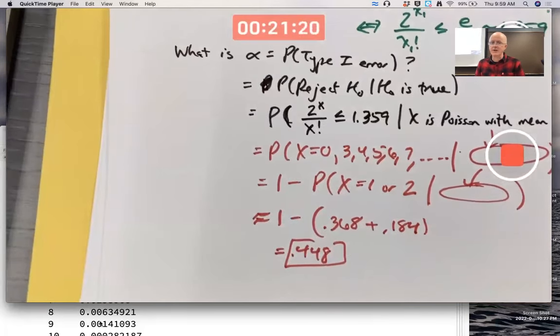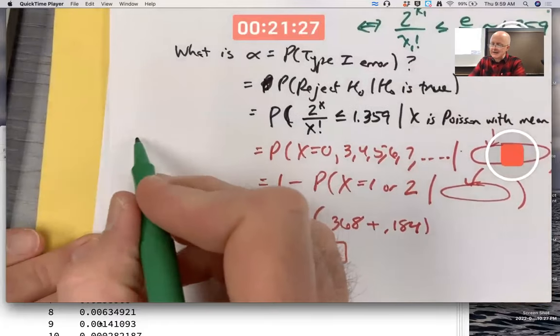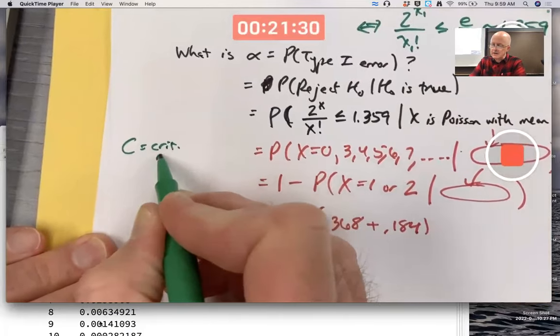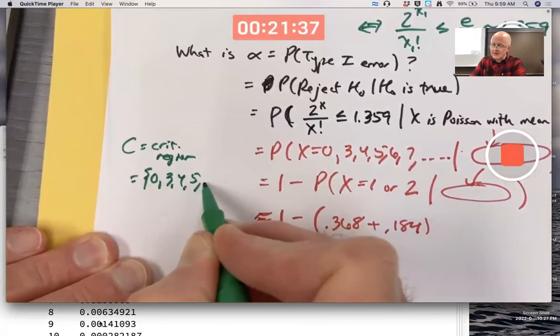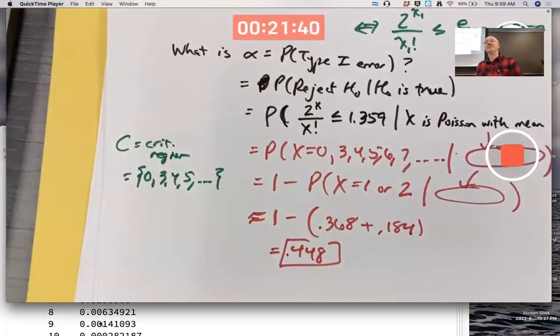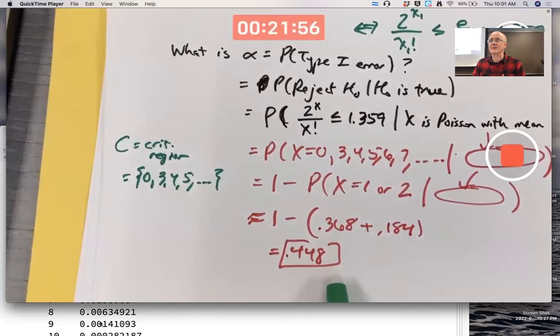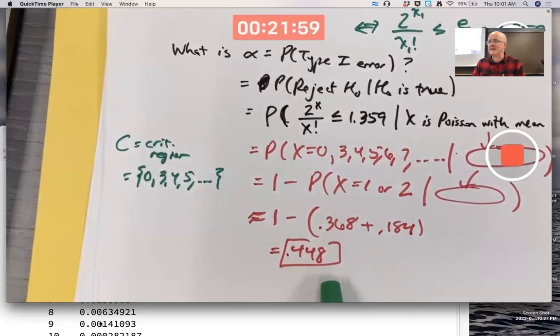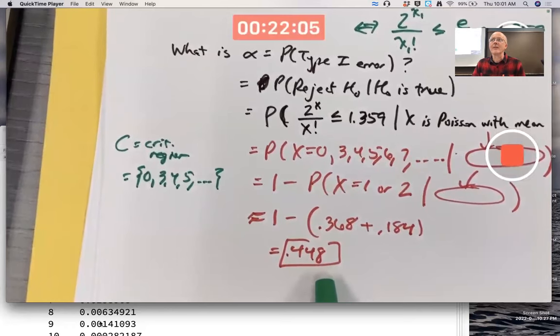If we use this as a rejection region, right here, the critical region. We call it C. C is a set here, the critical region. Would be the set containing 0, 3, 4, 5, 6, etc. Not 1 or 2. That will be a best critical region for this value of alpha. Now, because of the discrete nature of this random variable, it's hard to imagine that there's some other critical region corresponding to this exact value of alpha. Or even this approximate value of alpha. But this will be a best one. It will maximize the power.